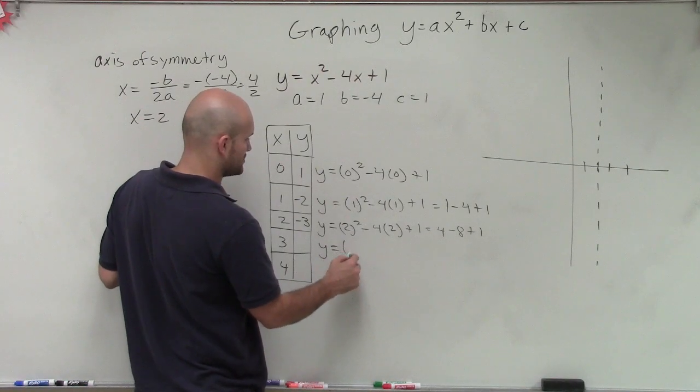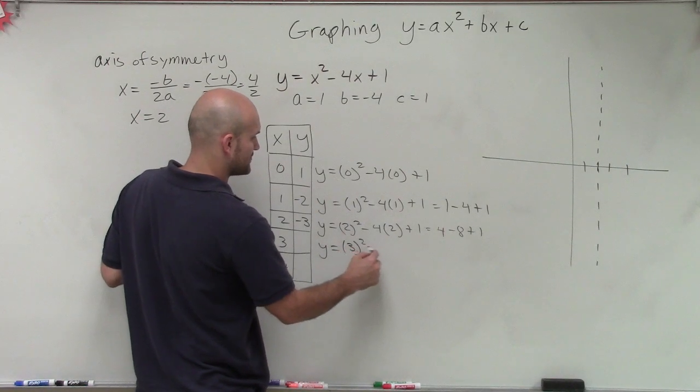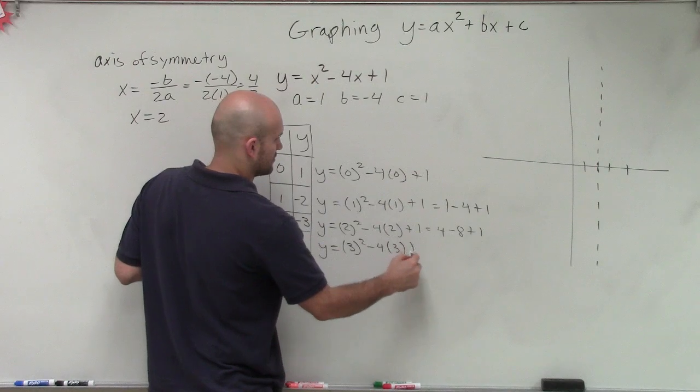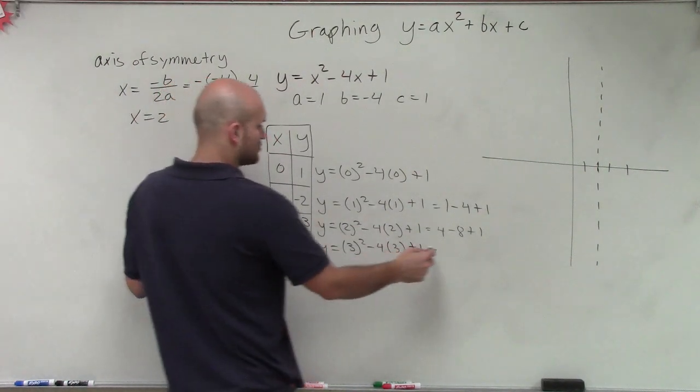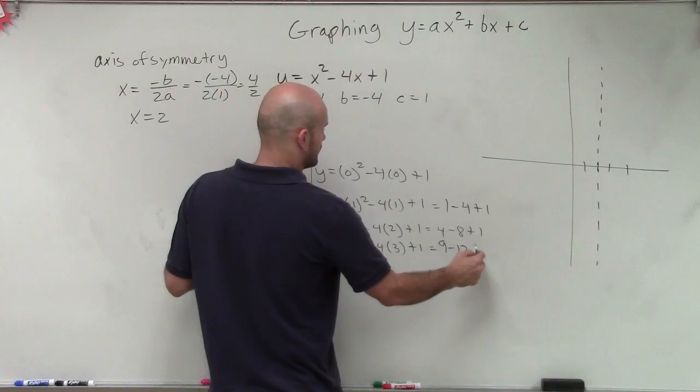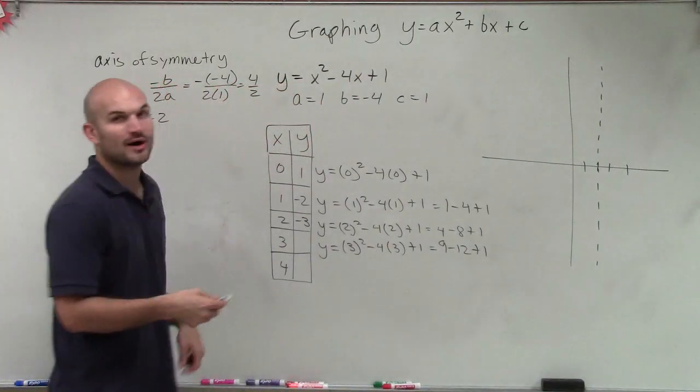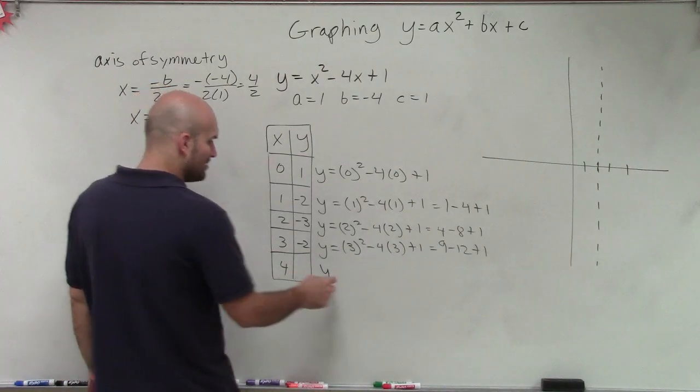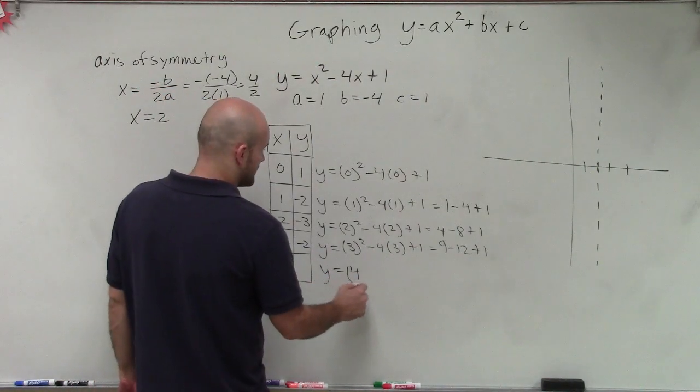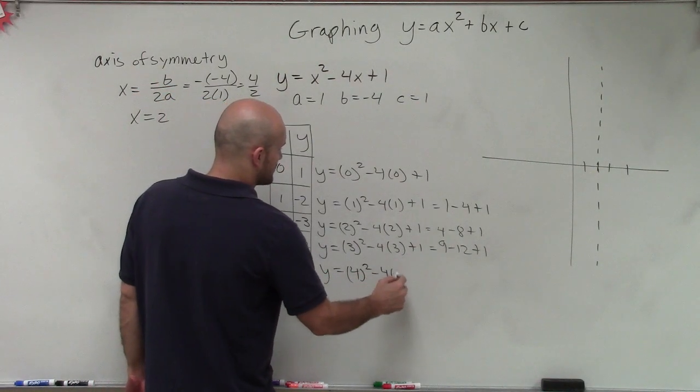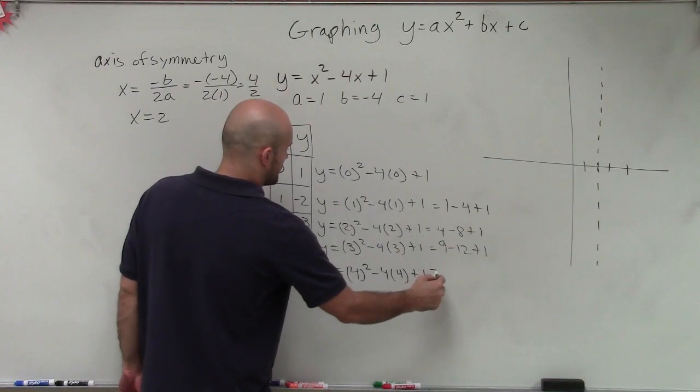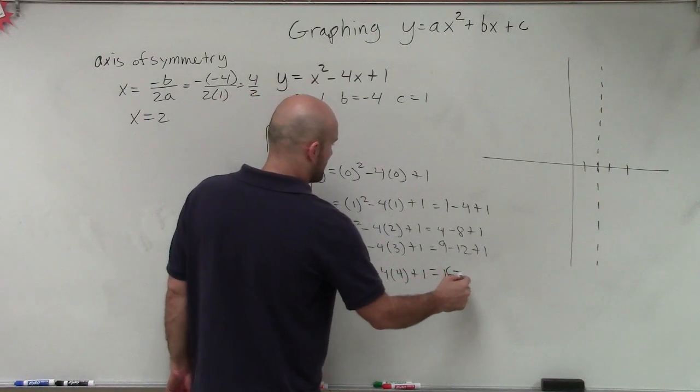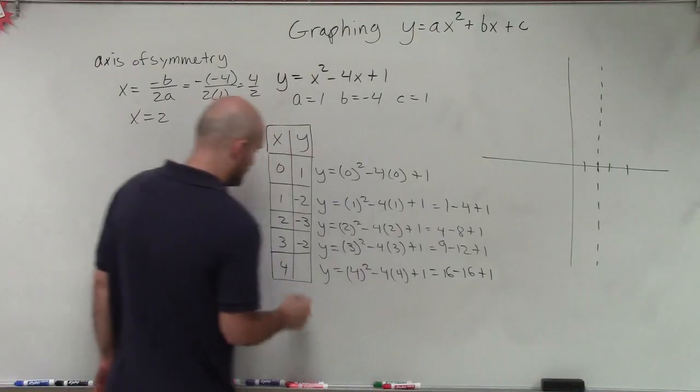But we will just use the work again to show this. 3 squared is going to be 9 minus 12 plus 1. And guess what? Negative 2. Then I know this answer is going to be 1. But let's show it one last time. 4 squared minus 4 times 4 plus 1 equals 16 minus 16 plus 1, which equals 1.